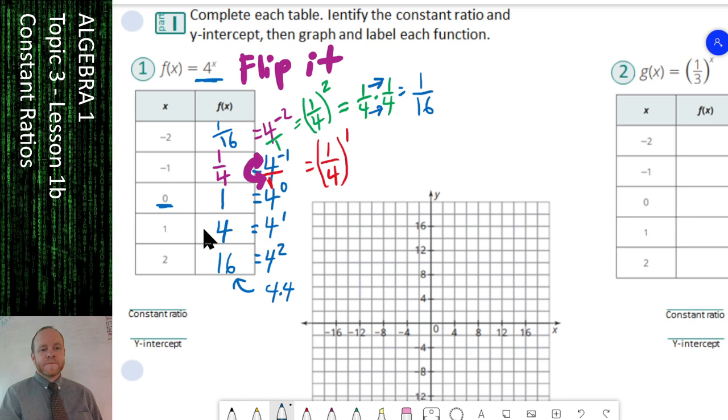So we filled out our table. Identify the constant ratio. The constant ratio is what we multiply by to get to the next one. If we take a quarter, we multiply it times 4, we get 1. If we take 1 and multiply it times 4, we get 4. 4 times 4 is 16. Constant ratio is 4. And the constant ratio is always going to be the number that is raised to the exponent. The y-intercept is always going to be the y-value when x is 0. So whatever is right across from the 0 for the x-value is our y-intercept.